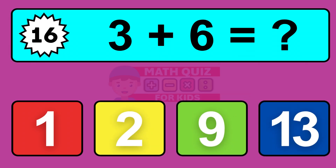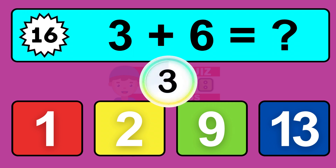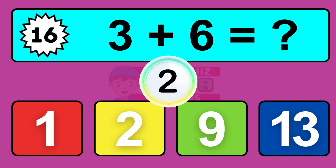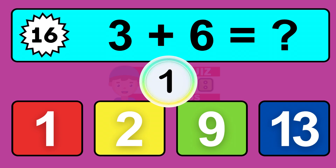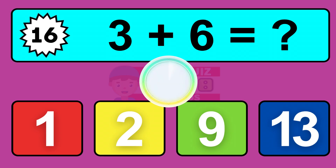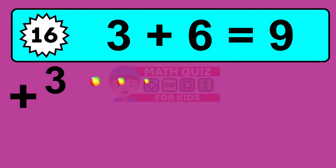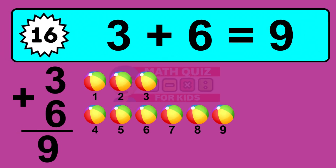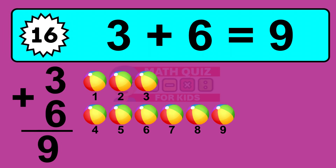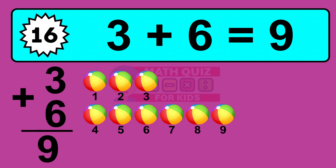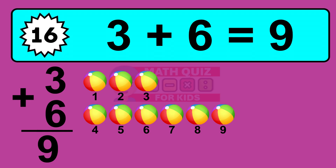Question 16. 3 plus 6 equals what? The answer is 3 plus 6 is 9. Let's count it: 1, 2, 3, 4, 5, 6, 7, 8, 9.